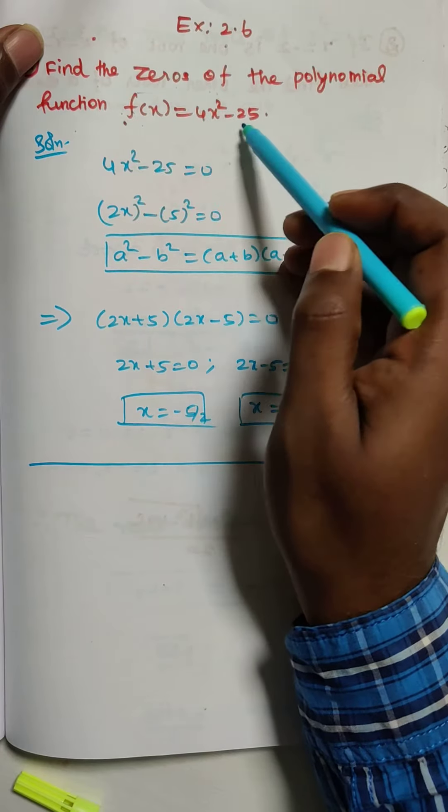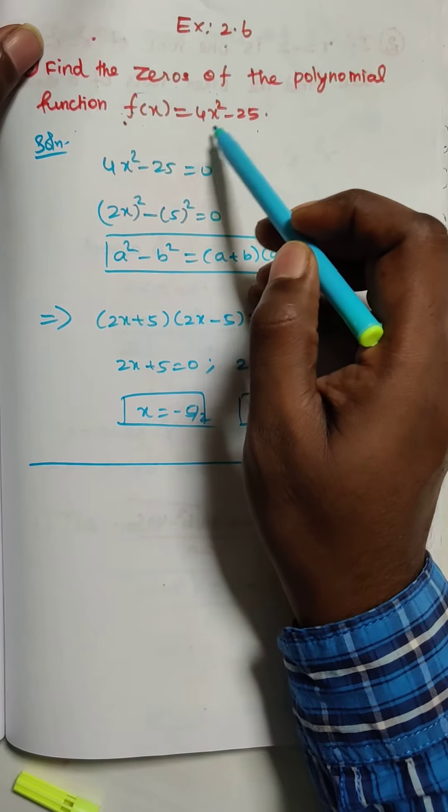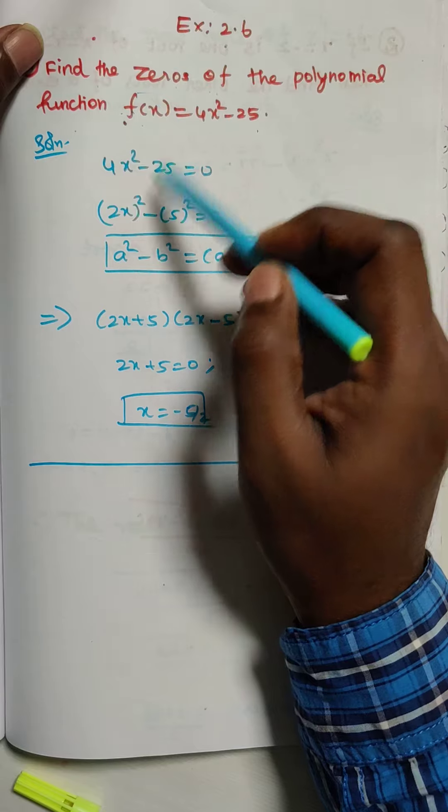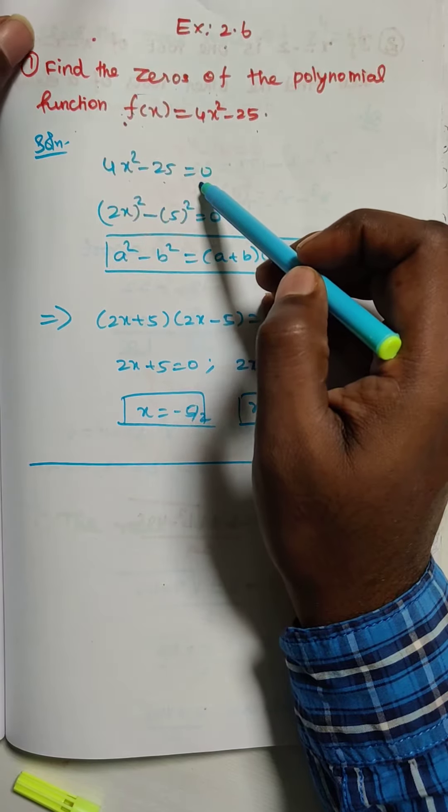So zeros of polynomial means the equation equals zero. I am going to take f(x) = 0, then 4x² - 25 = 0.